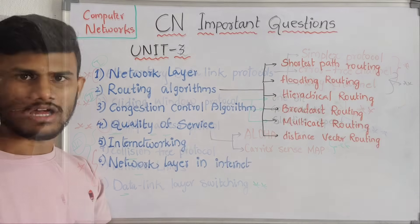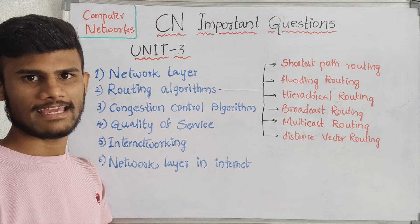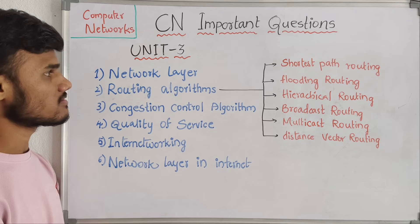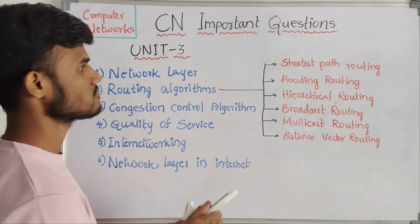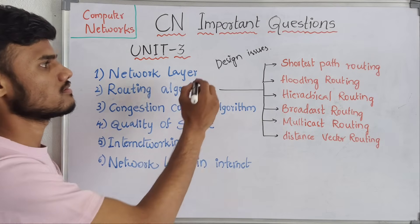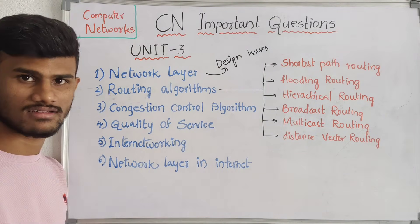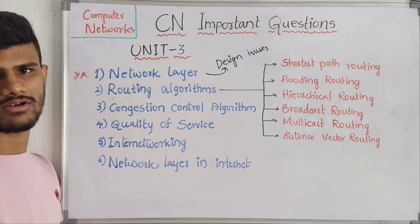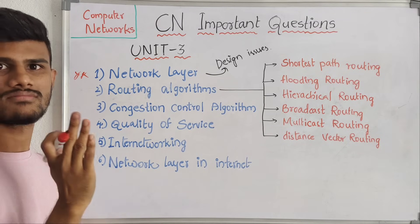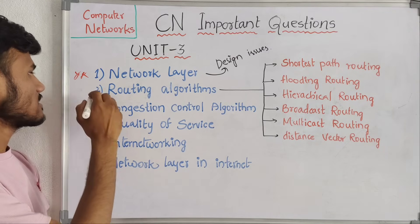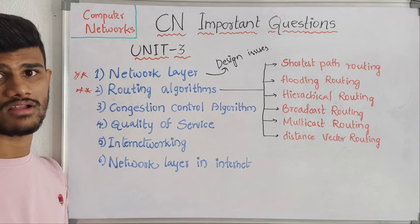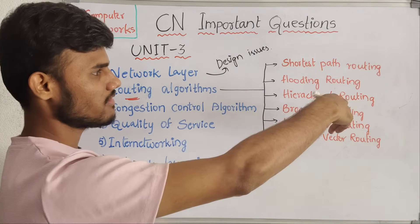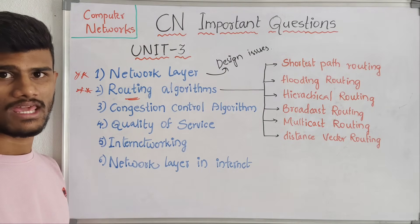Now coming to the third unit. This third unit is completely about network layers — network layer protocols, routing, and networking. The first topic is: what is done by the network layer and its design issues? What are the design issues of the network layer? It is the first, basic, and important question.